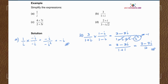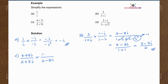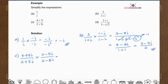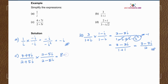For Example C: 4 plus 7i over 2 plus 5i. In order to simplify this expression, we multiply both numerator and denominator by the conjugate of the denominator, which is 2 minus 5i. Expanding the numerator gives 8 minus 20i plus 14i minus 35i squared.